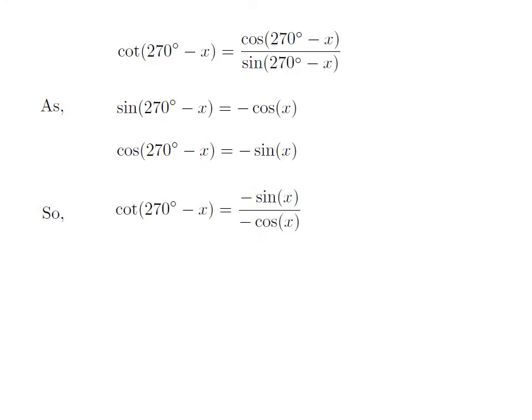Let us apply the above identities in the expression for cot of 270 degrees minus x. So cot of 270 degrees minus x equals minus sine of x divided by minus cosine of x. The negatives in the numerator and denominator cancel out, and sine of x divided by cosine of x equals tangent of x. Therefore, cot of 270 degrees minus x is equal to tangent of x.